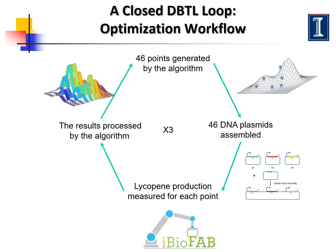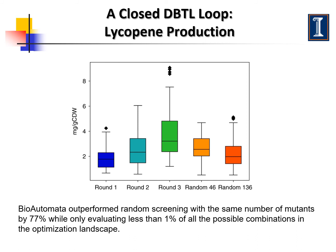This cycle of pathway optimization can be repeated until the goal is achieved. In this project, we only did three rounds, and we were able to identify a pathway variant that showed higher lycopene production than the best pathway variants identified by random screening.